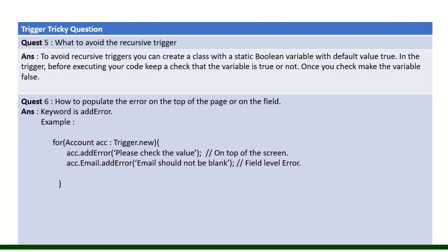A common interview question: how do you populate an error from a trigger to the page? There are two types. First, a page-level error — if there is a logical error, use acc.addError() to display it at the top of the screen. Second, a field-level error — use acc.fieldName.addError() to show the error on a specific field on the screen.